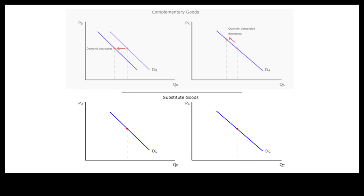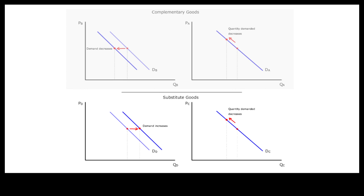A price increase in good C, on the other hand, will lead to a decrease in quantity demanded of good C, and an increase in demand for good D.